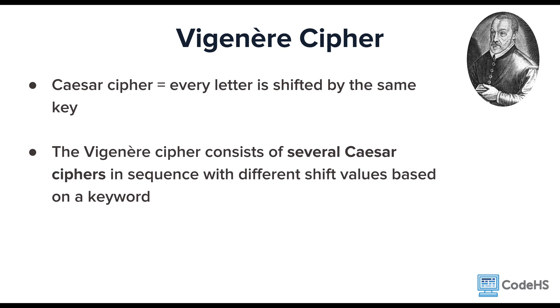He used the cipher, but he decided to use a different shift for each letter. The Vigenère cipher consists of several Caesar ciphers in sequence with different shift values based on a keyword. Let's take a look.